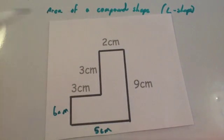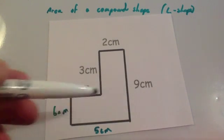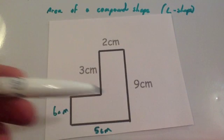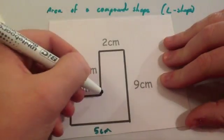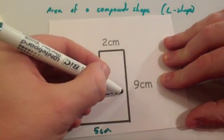Next thing, to find the area of the compound shape you're going to split it into the two rectangles. So you can either split it horizontally or vertically. It doesn't matter which way you do it, as long as you make sure that you multiply the right numbers together. Okay, so what we're going to do in this one is I'm just going to split it horizontally like this.